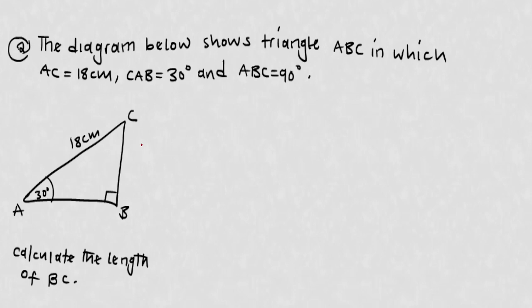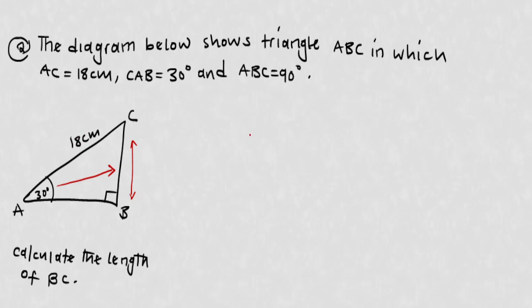The next question: the diagram shows triangle ABC in which AC is 18 centimeters, angle CAB is 30 degrees, and angle ABC is 90 degrees. Calculate the length of BC. We're looking for BC, which is the opposite side relative to the 30-degree angle, and we've been given the hypotenuse.